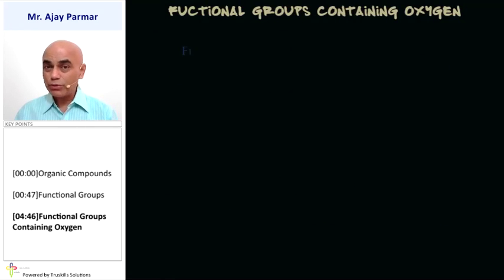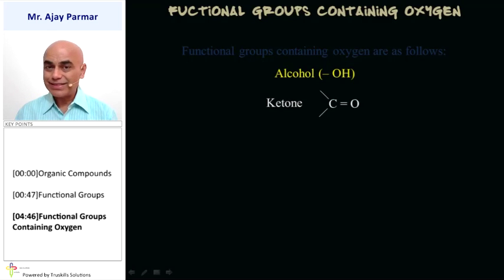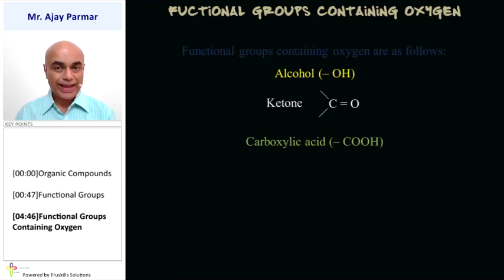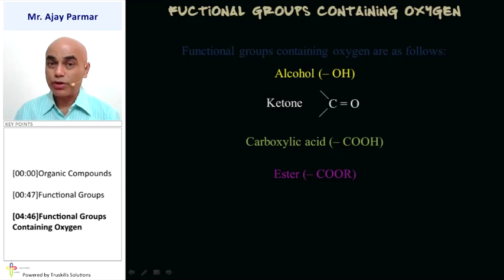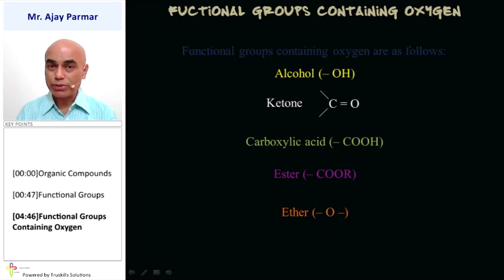There are some functional groups which contain oxygen. Examples include the alcohol group (also called hydroxyl group), that is OH; the ketone group, that is C double bond O; the carboxylic group, COOH; the ester group, COO, where R stands for the alkyl group; and the ether group, that is simply O bonded on both sides to other compounds or molecules. These are some examples of functional groups which contain oxygen.